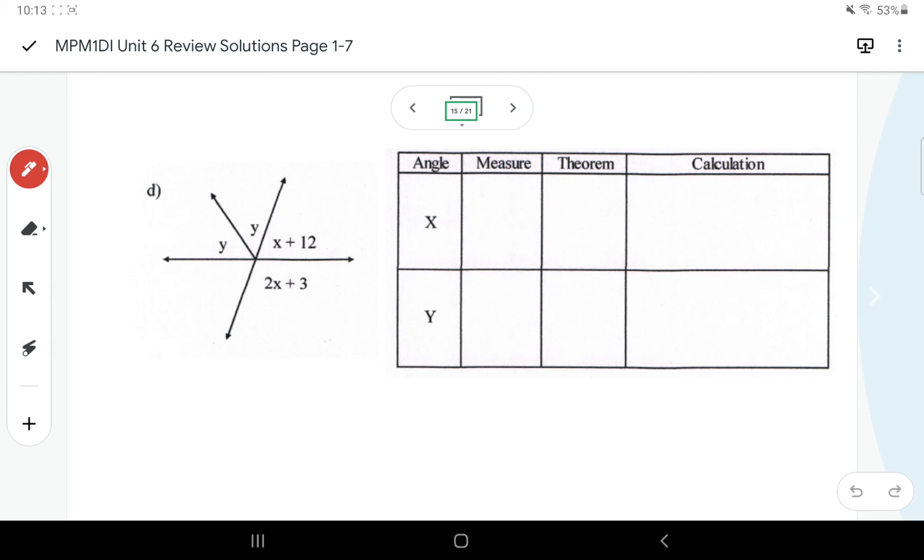So this one's the first one where we have to do some algebra in here. We've got our X plus 12 and our 2X plus 3, and they would be supplementary. So I'm going to say that X plus 12 plus 2X plus 3 equals 180, and that's the supplementary angle theorem. So here I get 3X plus 15 equals 180. 3X is 180 minus 15, so 3X equals 165, and we divide by 3. We get 55 degrees for our X.